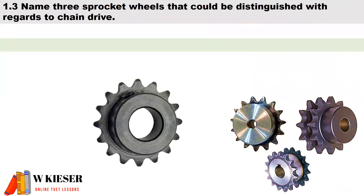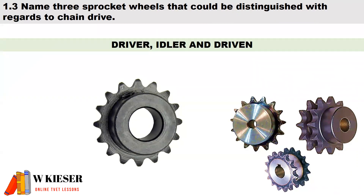In question 1.3, we need to name three sprocket wheels that could be distinguished with regards to chain drives. They are drivers, idlers, and driven sprocket wheels.